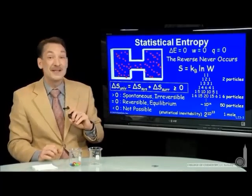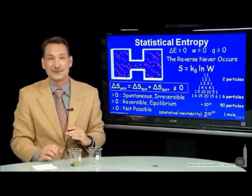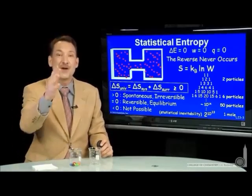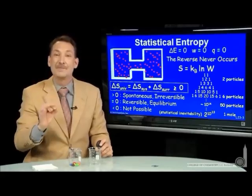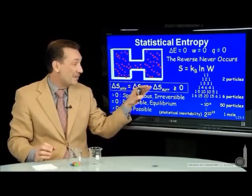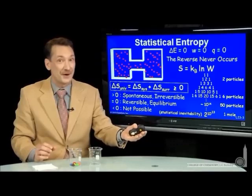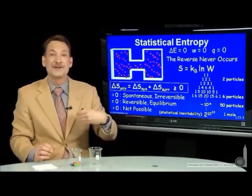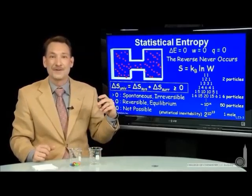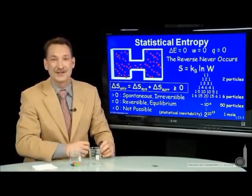Entropy decreasing in the universe — those processes are not possible. So now we have a thermodynamic parameter that will tell us the direction of things. If we can measure entropy of the system and the surroundings, and if the sum of those entropy changes is greater than zero, the entropy of the universe increases — that is the favored direction of that chemical or physical process. It's entropy that determines the favored direction in the universe.